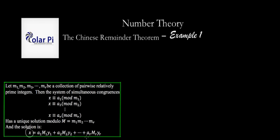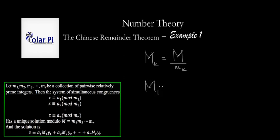The solution x is described at the bottom. The only things not yet defined are the capital M_k's and the y's. Capital M_k is equal to capital M divided by little m_k. So capital M sub 1 equals capital M divided by little m sub 1 — meaning leave out m_1 and multiply all the other little m's, m_2 through m_r.